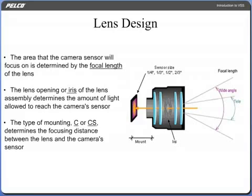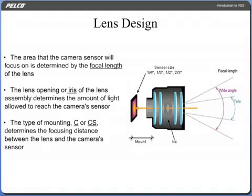The purpose of any lens is to properly focus an image on the faceplate of the camera's sensor. The area that the camera sensor will focus on is determined by the focal length of the lens. The lens opening or iris of the lens assembly determines the amount of light allowed to reach the camera's sensor. The type of mounting, C or CS, determines the focusing distance between the lens and the camera's sensor.